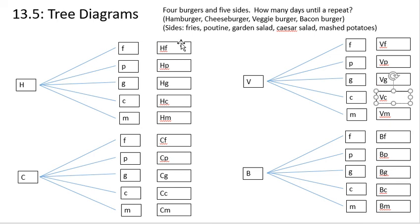Now we can count them. So there are five here, five here, five here, and five here. That means there are 20 possible outcomes. That means that we can go 20 days of meals and not have the same lunch twice. And it would be the 21st day when we have to have one of these again.